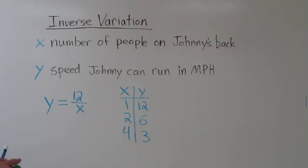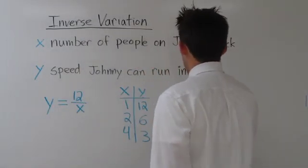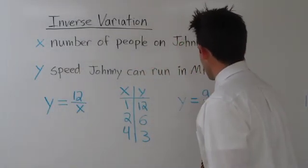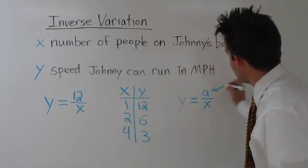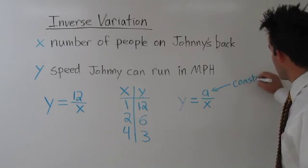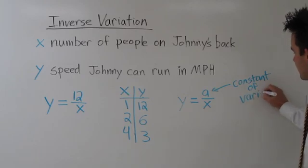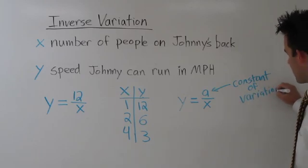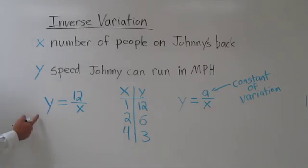In general, inverse variation can be modeled like this: y equals a divided by x, where our constant of variation is a. In our actual example, our constant of variation was 12.